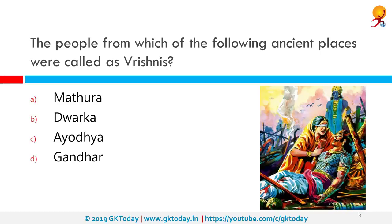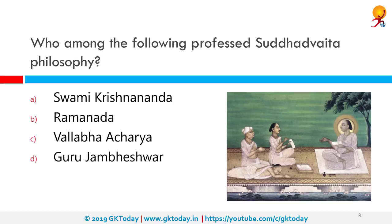After the Battle of Panipat, the people from which ancient place are called Vrishnis? They are from Dwarka. The Vrishnis were an ancient Vedic Indian clan believed to be descendants of Vrishni, a descendant of Yadu. Vrishni had two wives, Gandhari and Madri, and had a son named Deva Mithusha by his wife Madri.